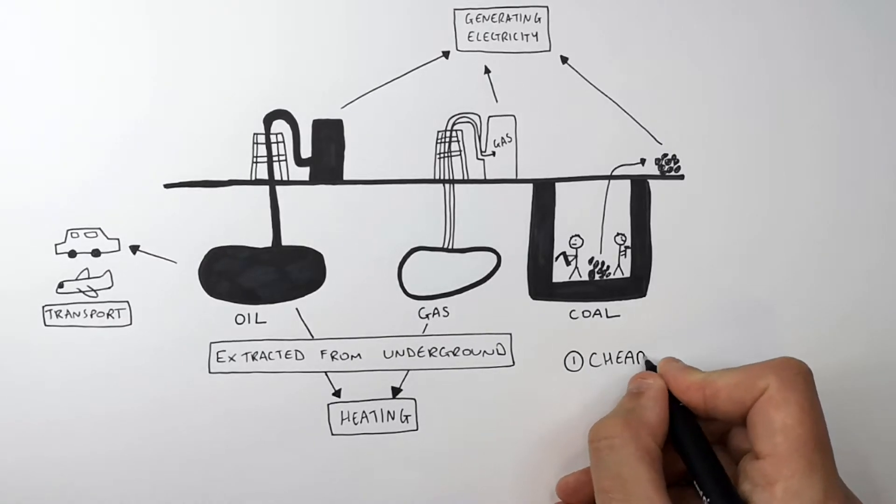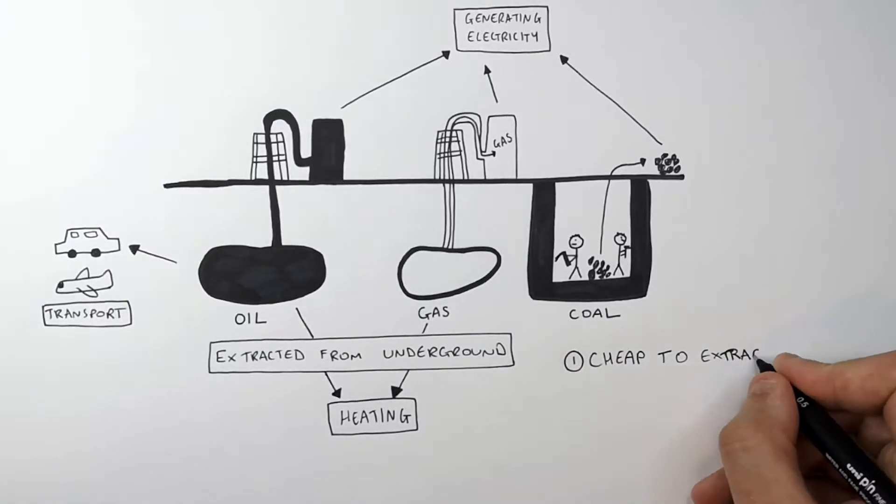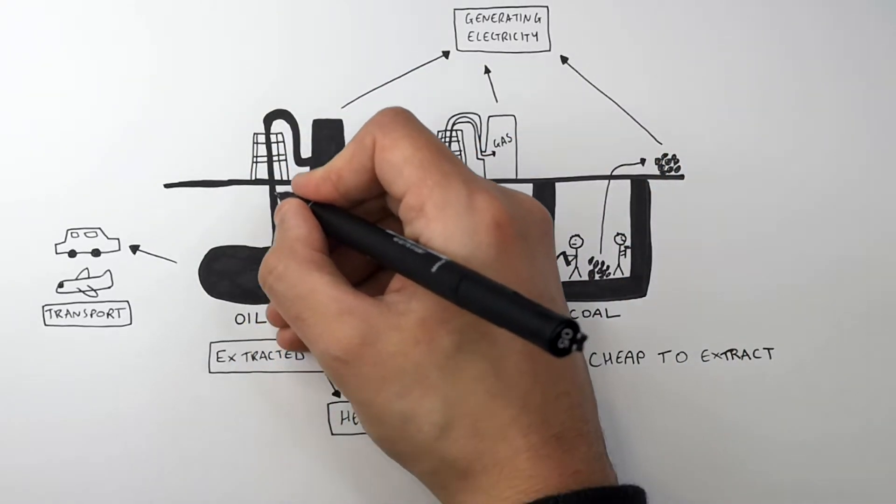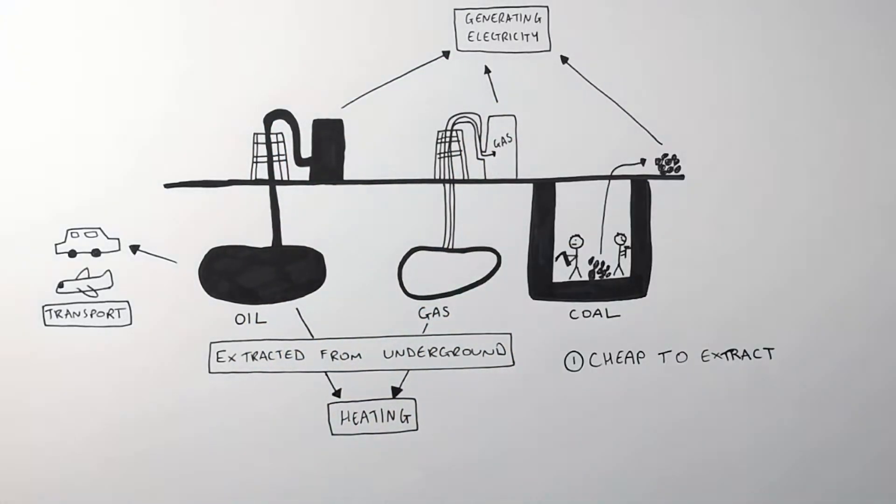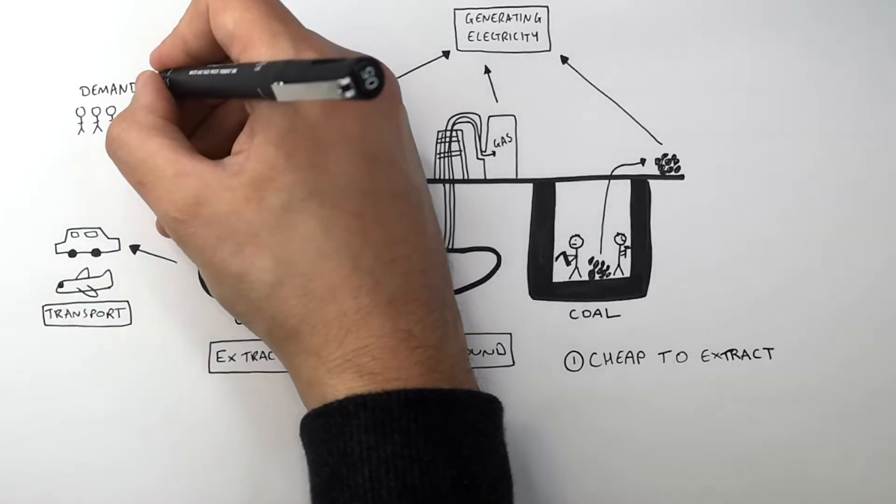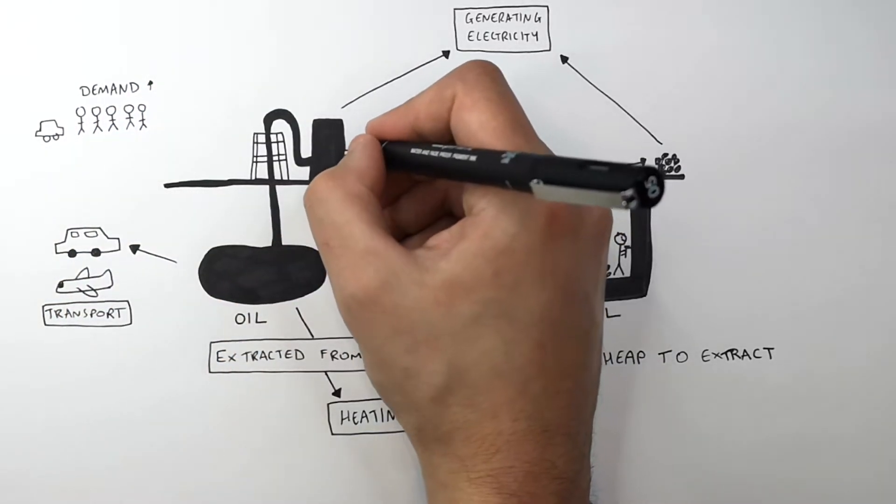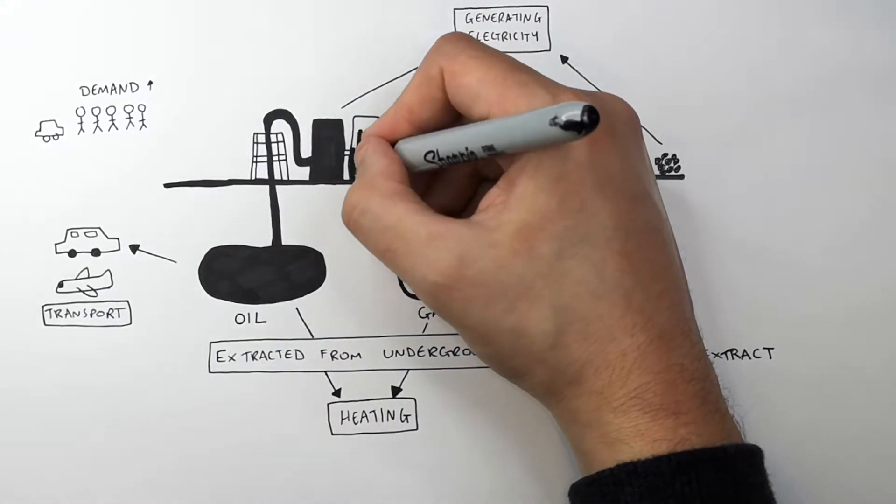So their advantages are that they are relatively cheap to extract, so it's very easy to control the supply and production of oil, gas and coal. If the demand for oil goes up due to increased transport usage, it's very easy to increase the supply of oil to match the demand.